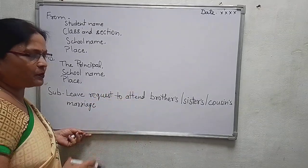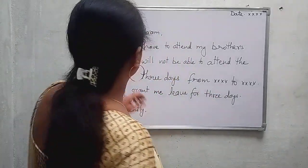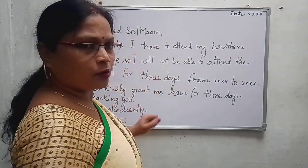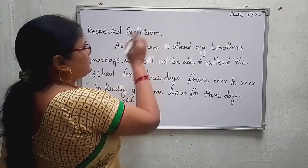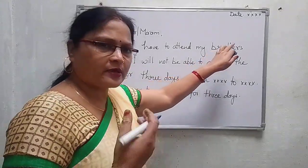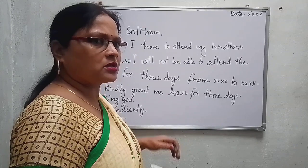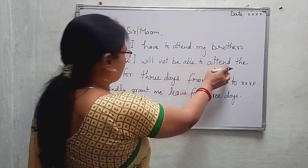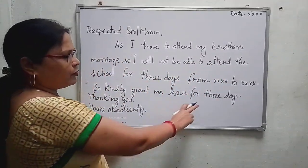Now let's see how we will write the body of the letter. Start with 'Respected Sir' or 'Ma'am' — if your school principal is a sir, write sir; if it is a ma'am, write ma'am. Then write: 'As I have to attend my brother's marriage' — or cousin's or sister's, depending on your relationship — 'I will not be able to attend school for three days.' Then from here, you will write the date.